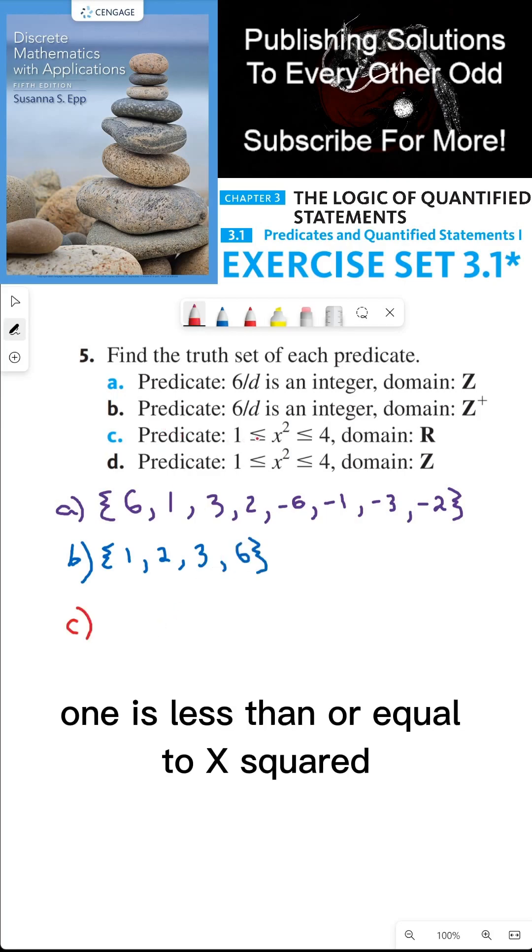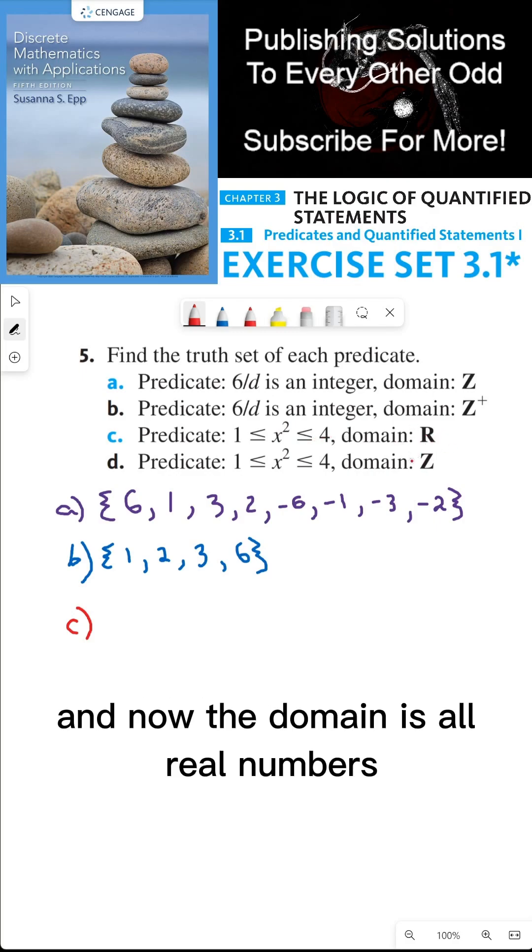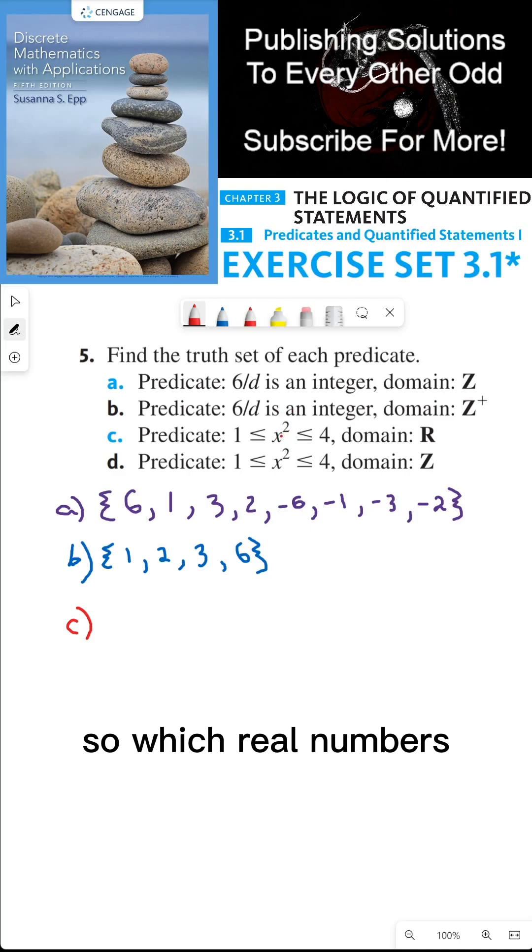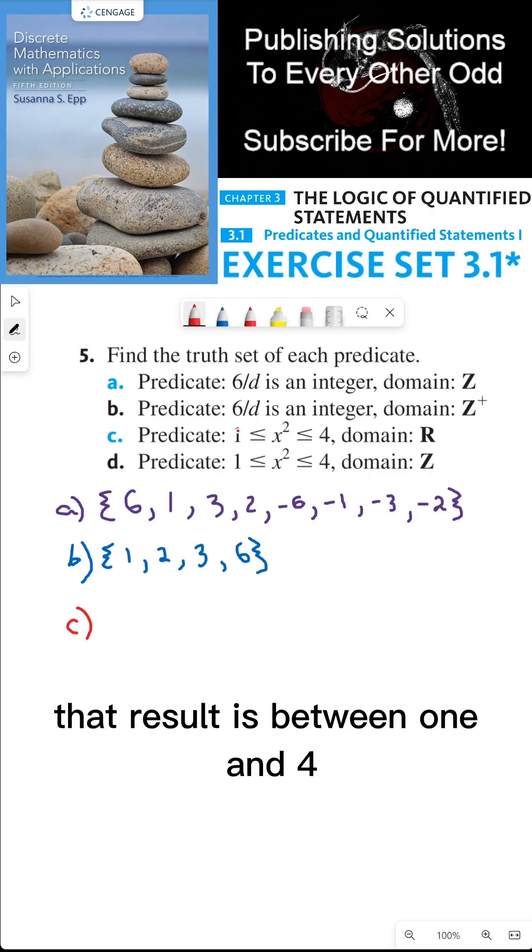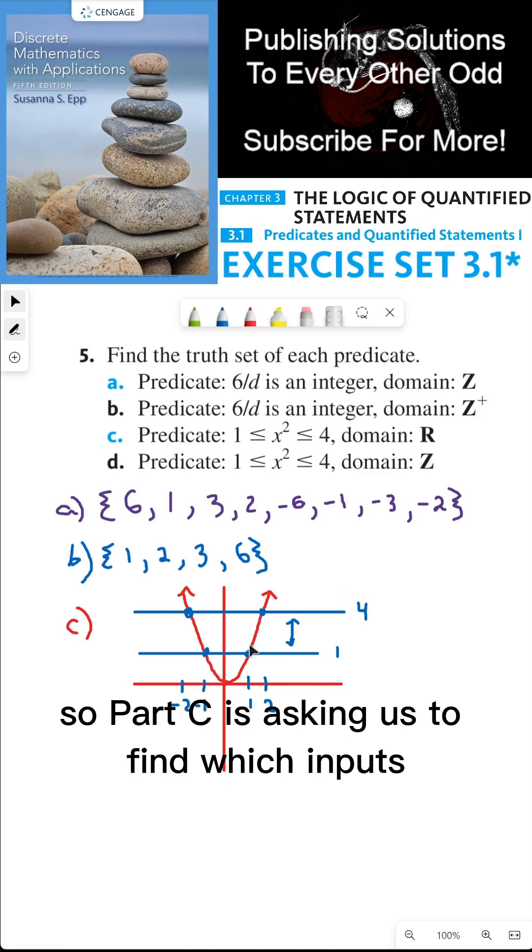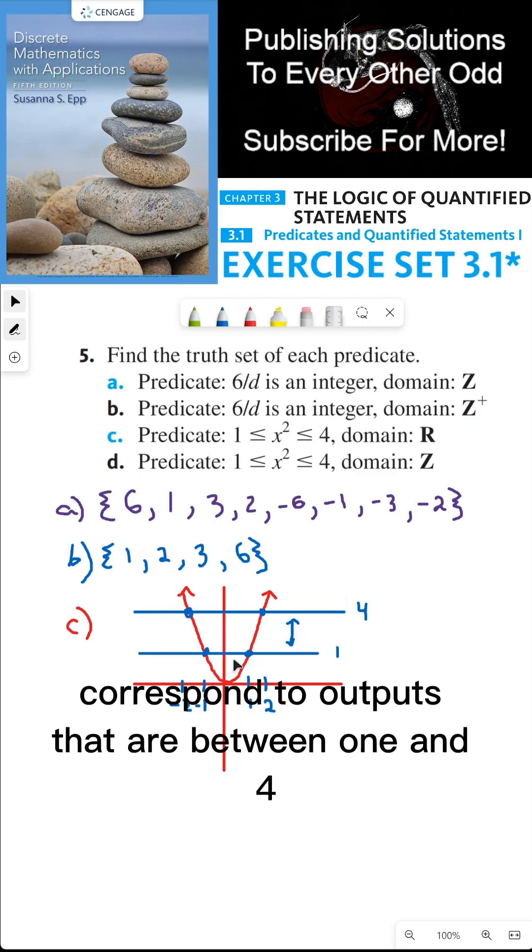For part C, the predicate is 1 is less than or equal to x squared, which is less than or equal to 4. And now the domain is all real numbers. So which real numbers have the property such that if you square that real number, that result is between 1 and 4. So part C is asking us to find which inputs correspond to outputs that are between 1 and 4.